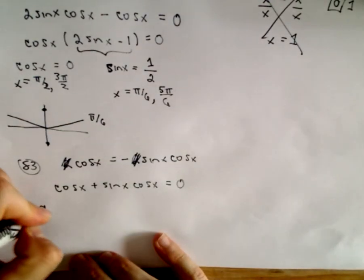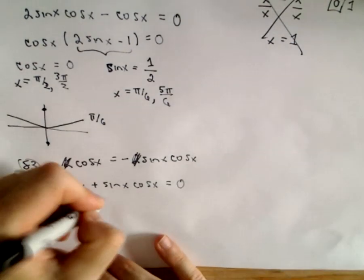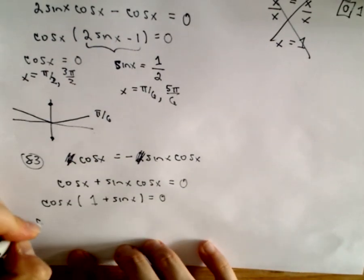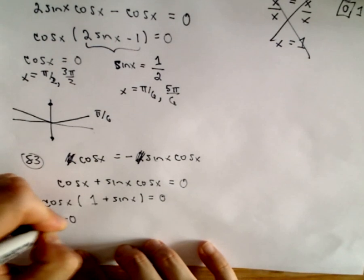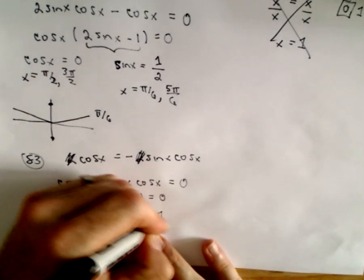Again, we could factor out the cosine x. We would be left with 1 plus sine x. Well, that tells me that cosine of x has to equal 0, and it tells me that sine of x has to equal negative 1.